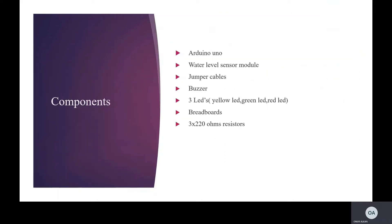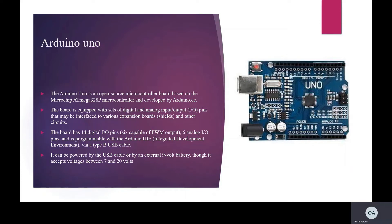I will talk about the components used in the project: Arduino Uno, water level sensor module, jumper cables, buzzer, 3 LEDs, breadboard, and resistors. First, I will explain what the Arduino Uno is. It is an open-source microcontroller board based on the Microchip ATmega328P microcontroller and developed by Arduino CC. The board is equipped with sets of digital and analog input/output pins. The board has 14 digital I/O pins, six analog I/O pins, and is programmable with the Arduino IDE via a Type-B USB cable. It can be powered by USB cable or by an external 9V battery through its voltage regulator, supporting between 7 and 20V.